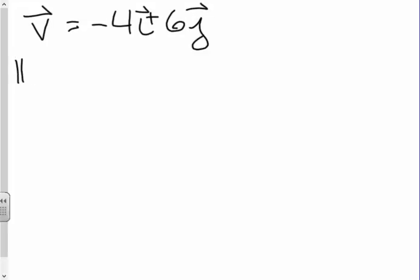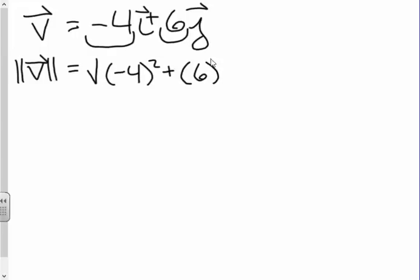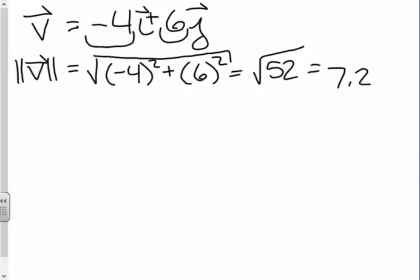Alright, in order to find magnitude or these double absolute value bars, it is the distance formula. So it's going to be the square root of negative 4 squared plus 6 squared, which is the square root of 52. If you wanted to leave it as a radical, you certainly could, or you could take the square root of it and get approximately 7.2.